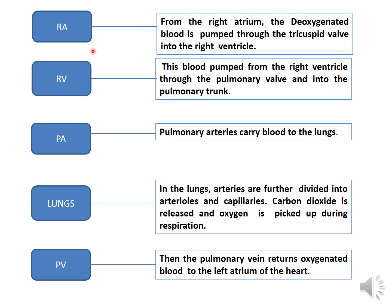Now let us see in detail about pulmonary circulation. The first cardiac chamber, the right atrium, receives venous blood and pumps it into the right ventricle through the tricuspid valve. Then the right ventricle receives blood from the right atrium and ejects the deoxygenated blood into the pulmonary trunk through the pulmonary valve. The pulmonary trunk then bifurcates into right and left pulmonary arteries.